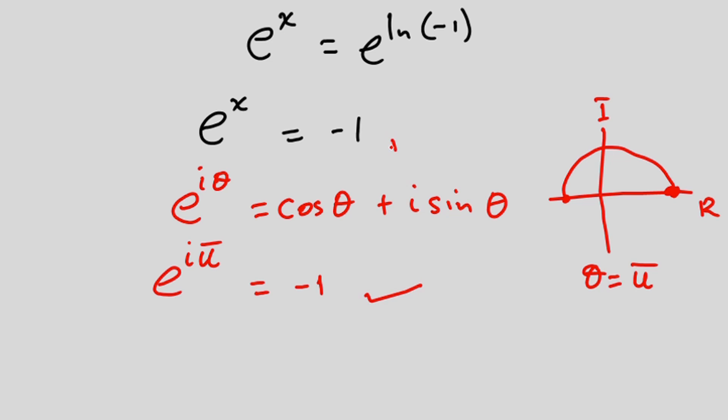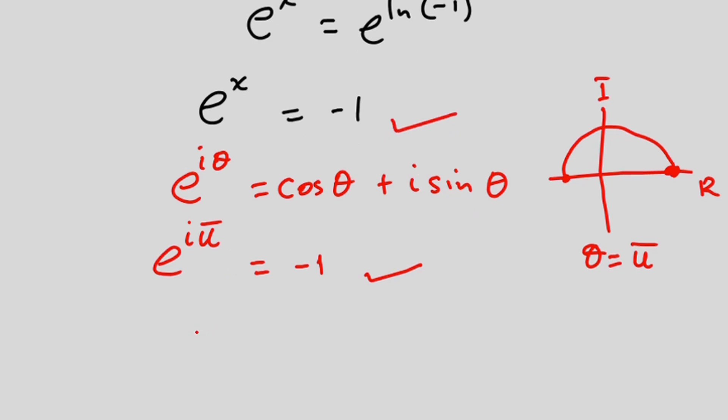So by comparison we can say that x is equal to iπ. That is when θ is equal to 180 degrees.